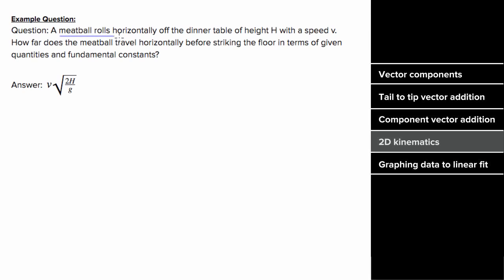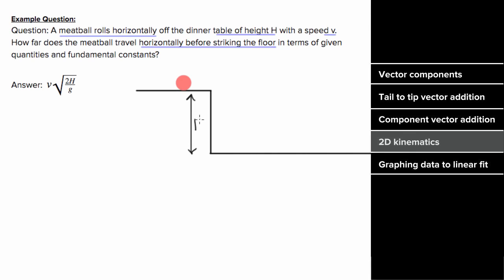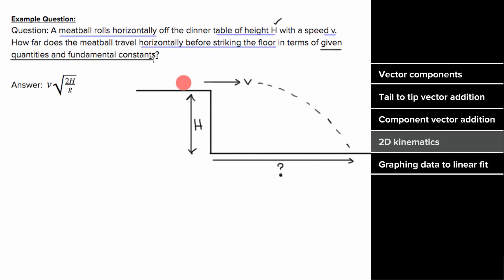Say a meatball rolls horizontally off a dinner table of height h with a speed v, and we want to know how far horizontally the meatball travels before striking the floor. The first thing we should do is draw a diagram. The height of the table is h, the initial speed is v, and we want the horizontal distance from the edge of the table. Note this problem is symbolic — we're not given numbers, so we give our answer in terms of given quantities and fundamental constants.